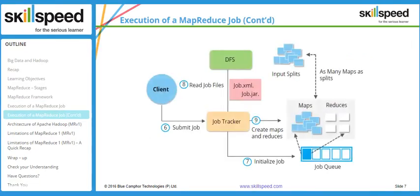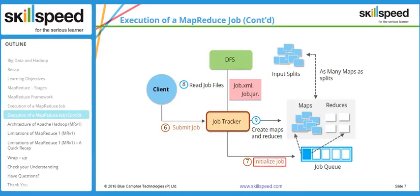In this MapReduce workflow example, we are looking at Hadoop version 1. In Hadoop version 1, you have a daemon called the JobTracker, which is the master daemon and accepts all jobs submitted to the cluster. The job gets submitted to the JobTracker, which initializes it by putting it into a job queue. In a large production cluster, many people submit jobs, so they are allocated to the queue and processed one by one.